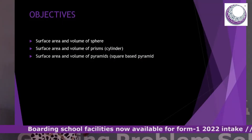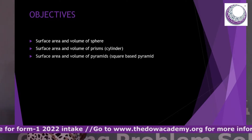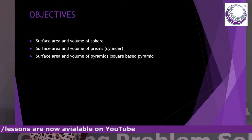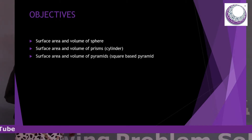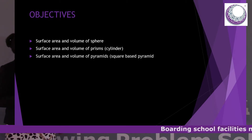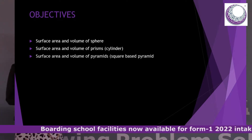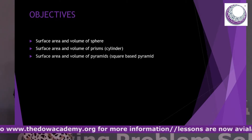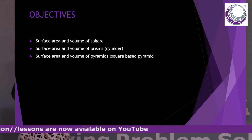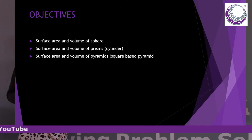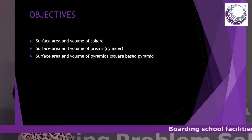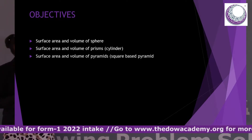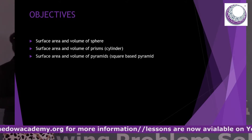I want to look at these solid shapes and make them into three groups. Firstly, we want to look at the area, surface, and volume of a sphere, because this is the easiest part — the part that you don't really need to worry much about, because the volume and surface area of a sphere is always provided in the examination. All you need to do is know the formula. Then we'll also look at the prisms with particular attention to the cylinder, and then we'll look at the pyramids with particular attention to the square-based pyramid and the cone.